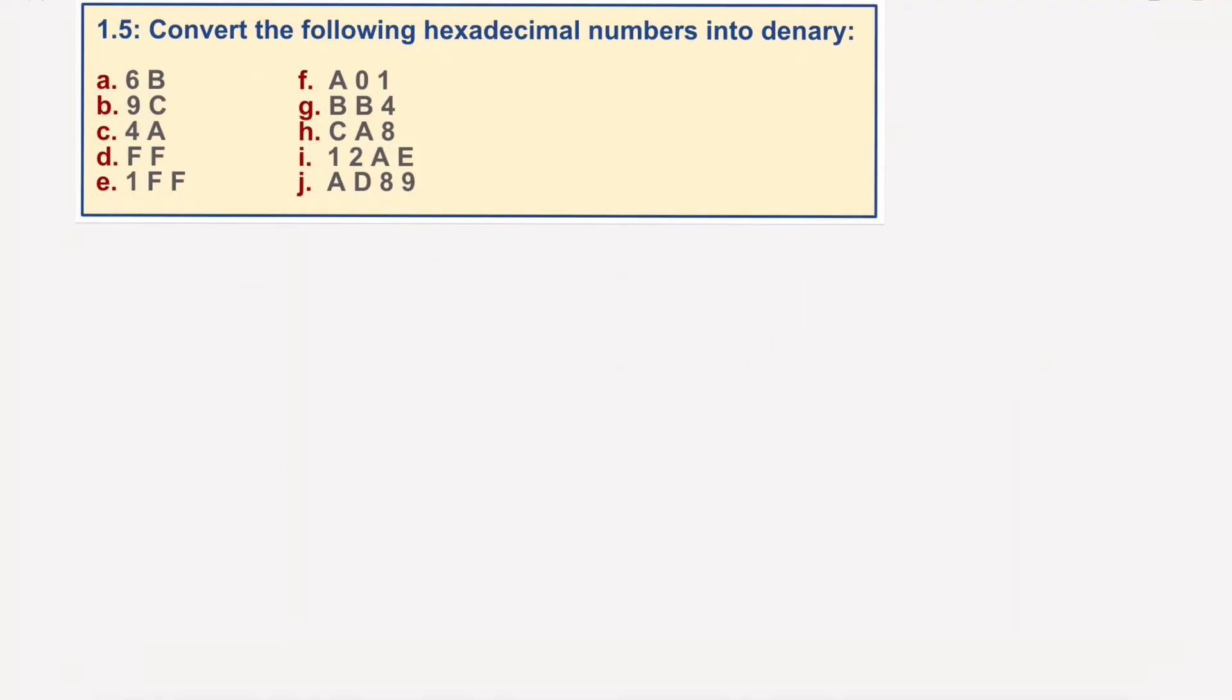We'll get started. Choose a pen. We have 6B. Now this is hexadecimal, and as we know about hexadecimal, unlike base 10 where it goes units, tens, hundreds, thousands